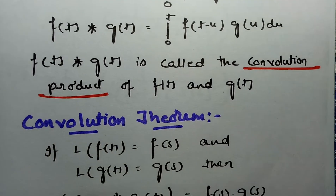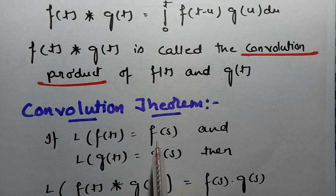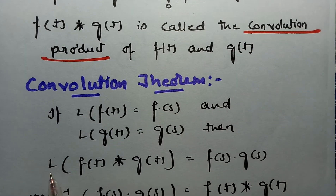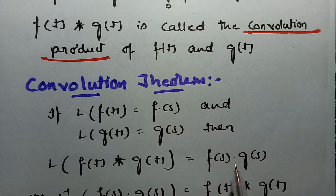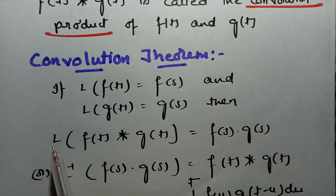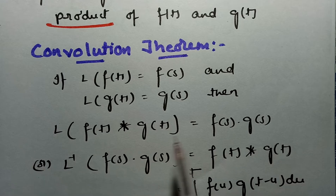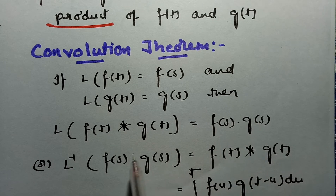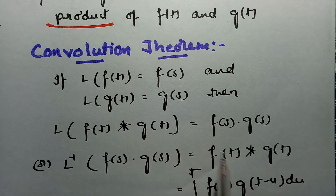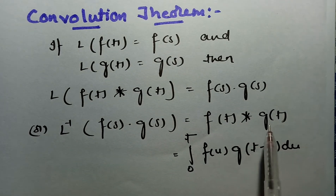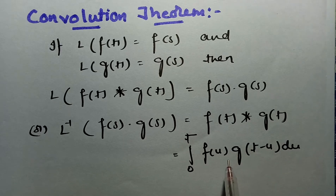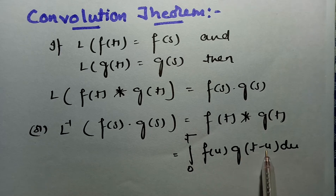Here is the convolution theorem. If the Laplace transform of f(t) is F(s) and the Laplace transform of g(t) is G(s), then the Laplace transform of f(t)★g(t) equals F(s)·G(s). Bringing L to the other side: the inverse Laplace transform of F(s)·G(s) equals f(t)★g(t), which is the integral from 0 to t of f(u)·g(t−u) du.